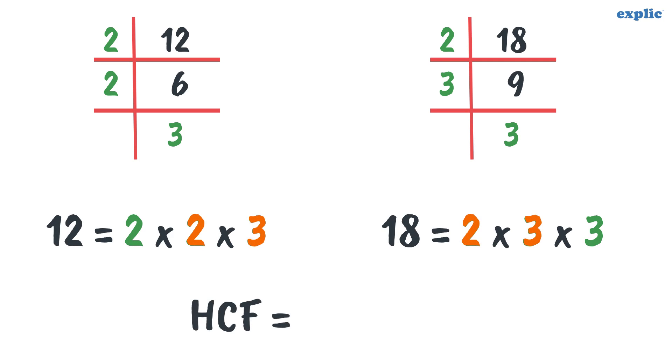Then multiply the common factors. The HCF of 12 and 18 is 6.